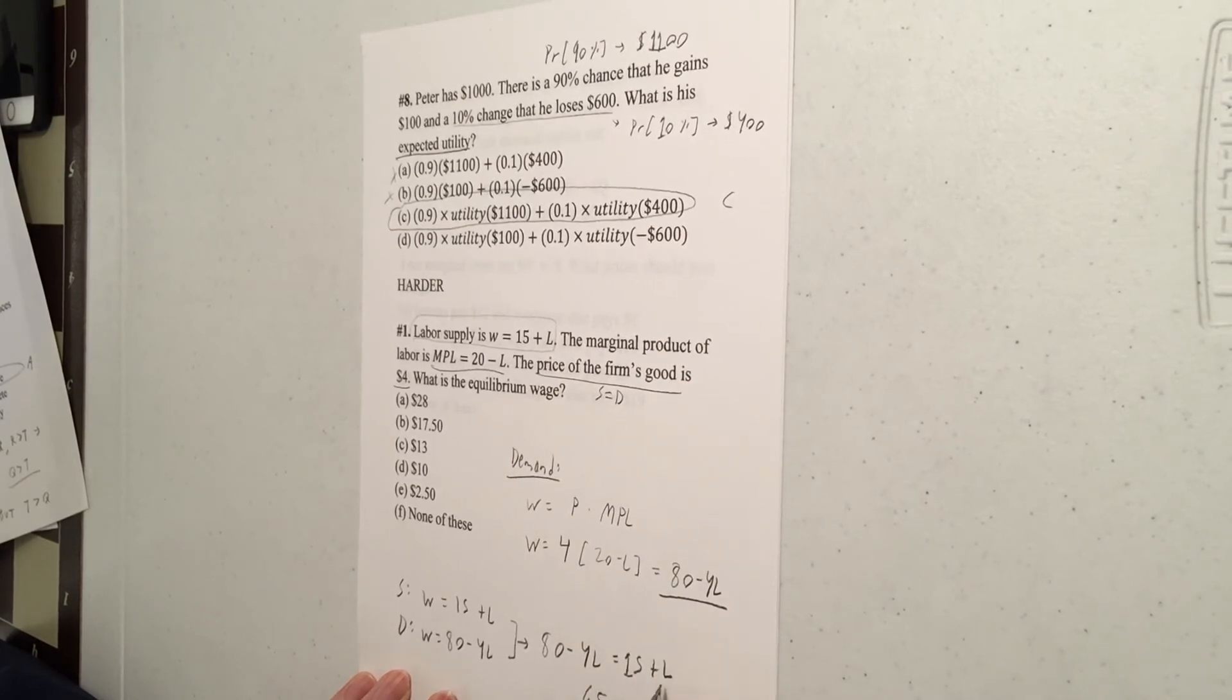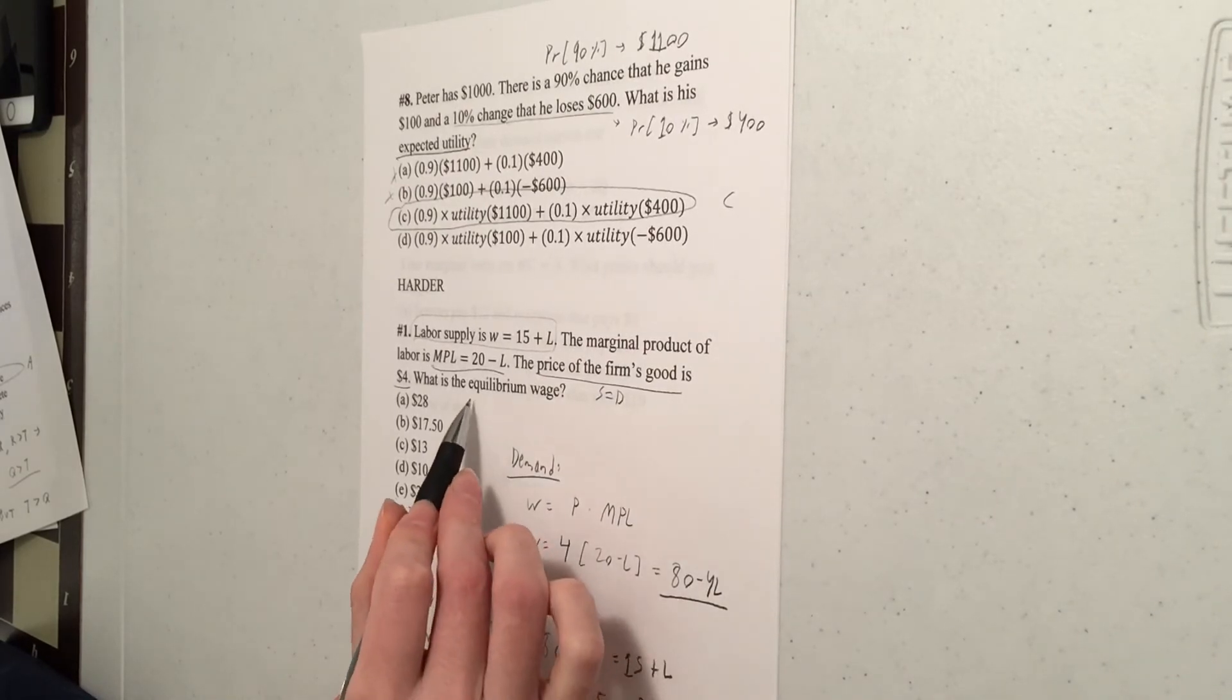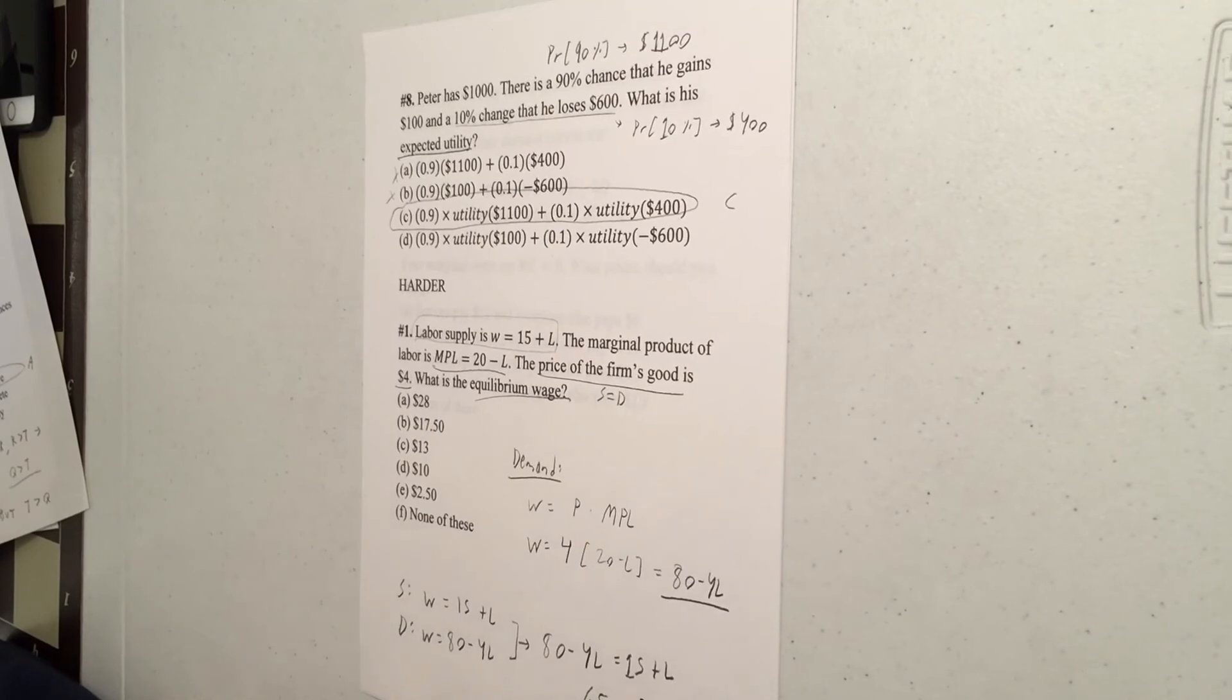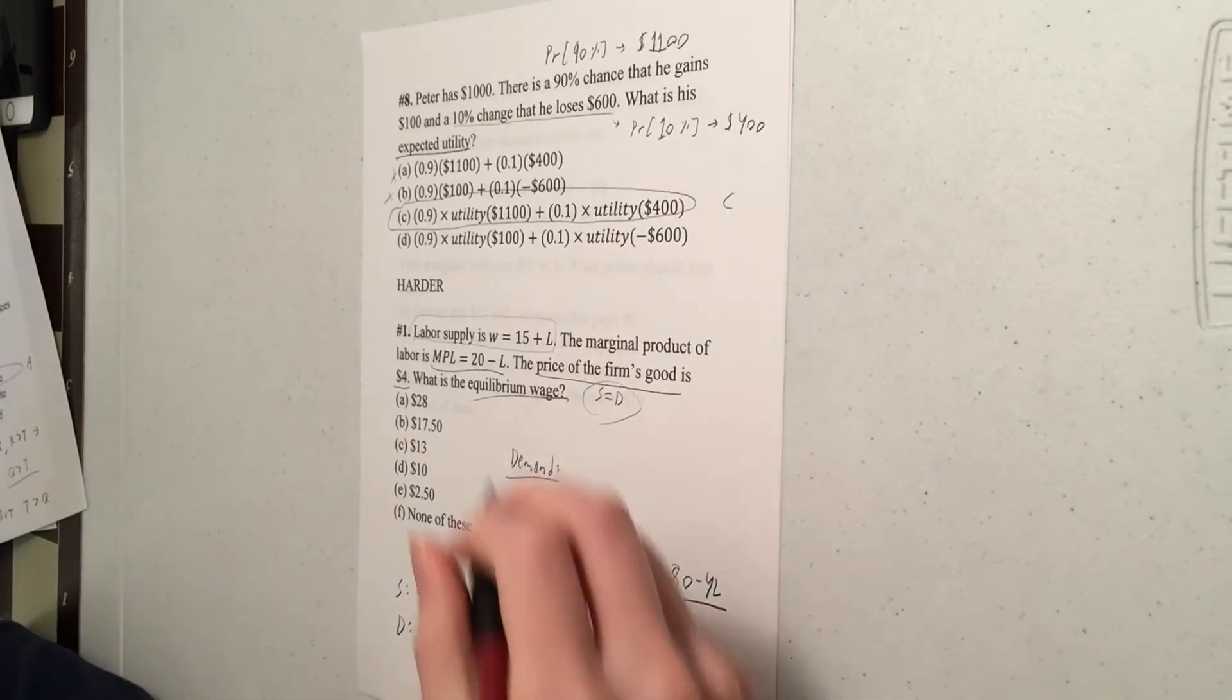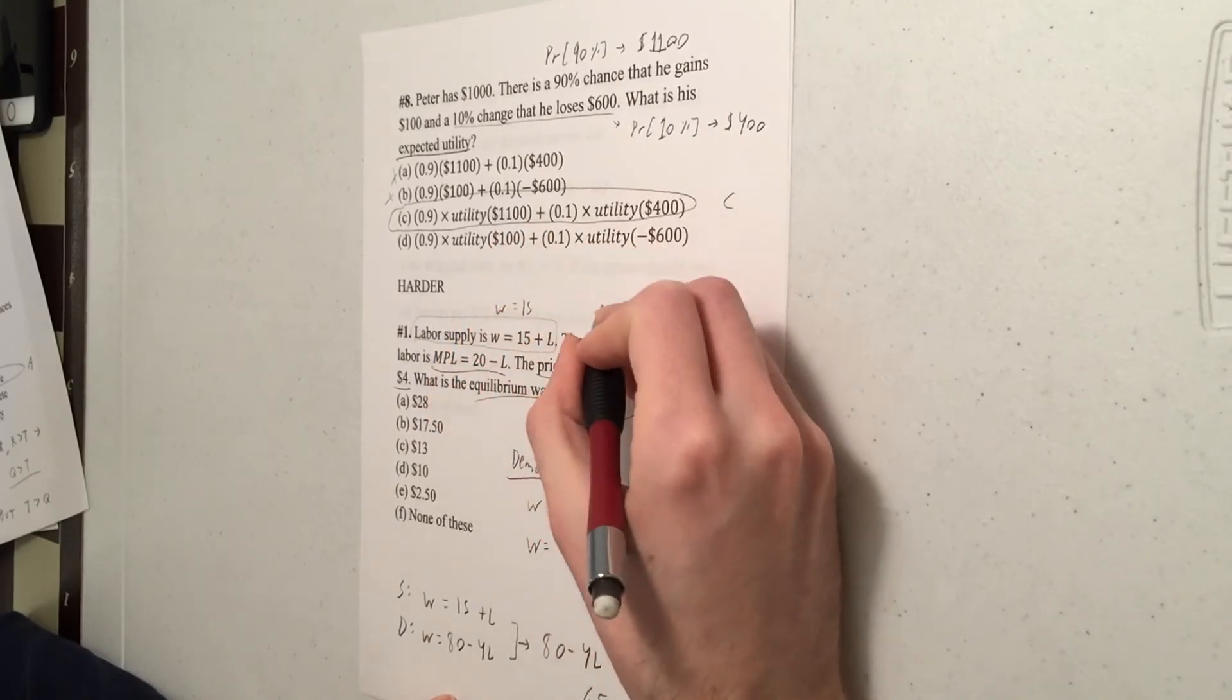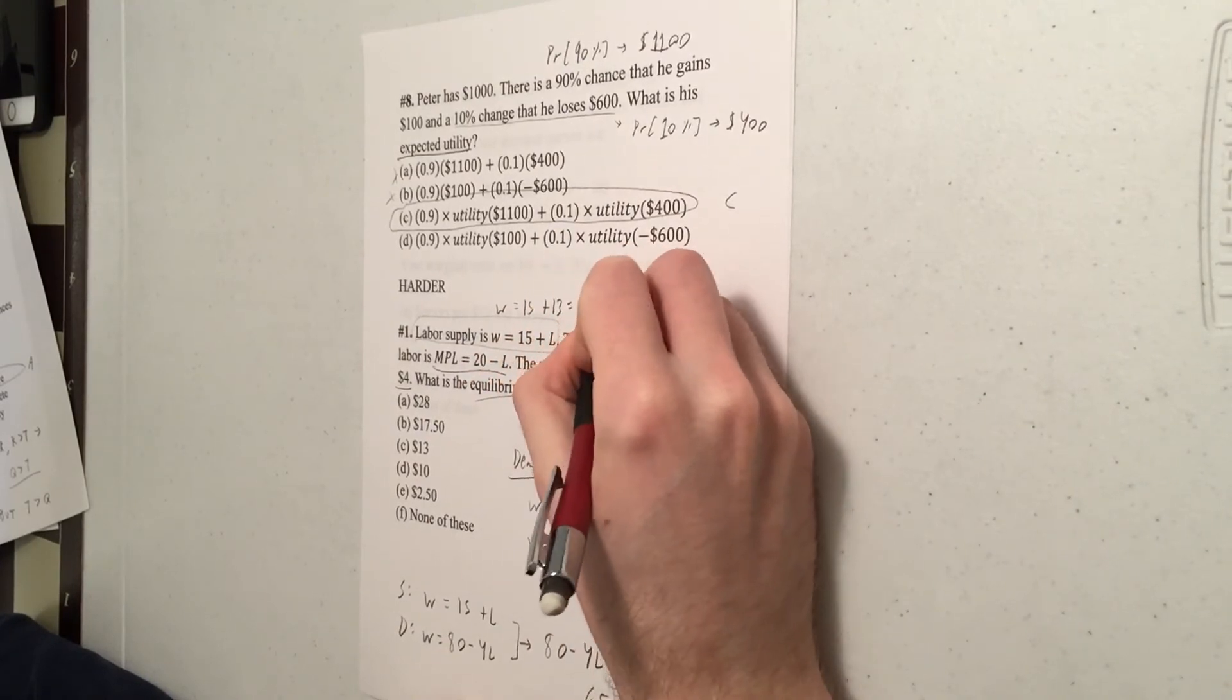So that means we can subtract 15 from both sides, which gives us 65. We can add 4L to both sides. 4L plus L is 5L. Divide both sides by 5, and we get 65 over 5 is 13. Now we're not done yet. It's about the equilibrium wage, not the equilibrium number of workers. To find the equilibrium wage, you can plug that in into the supply or demand. It doesn't matter because they're equal.